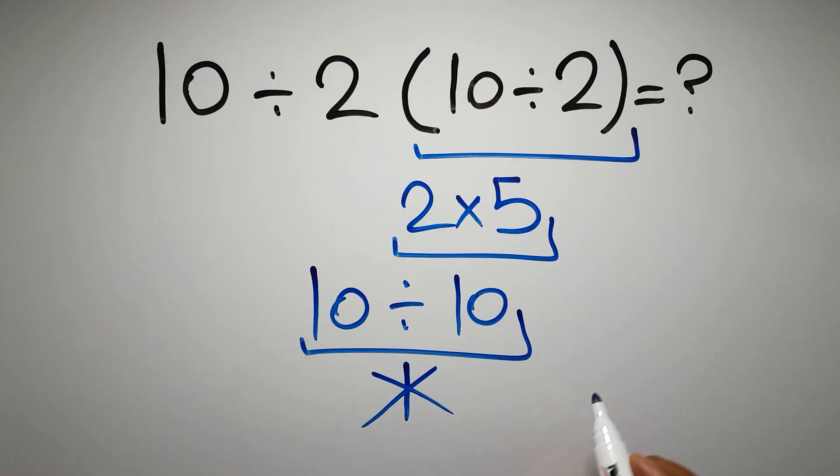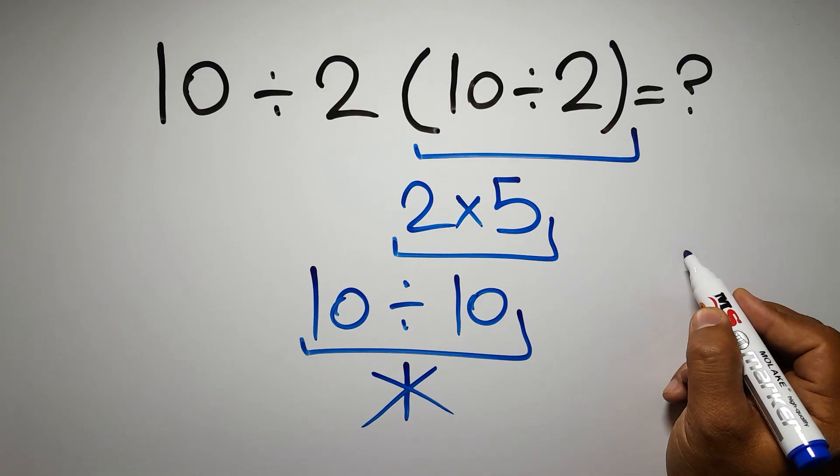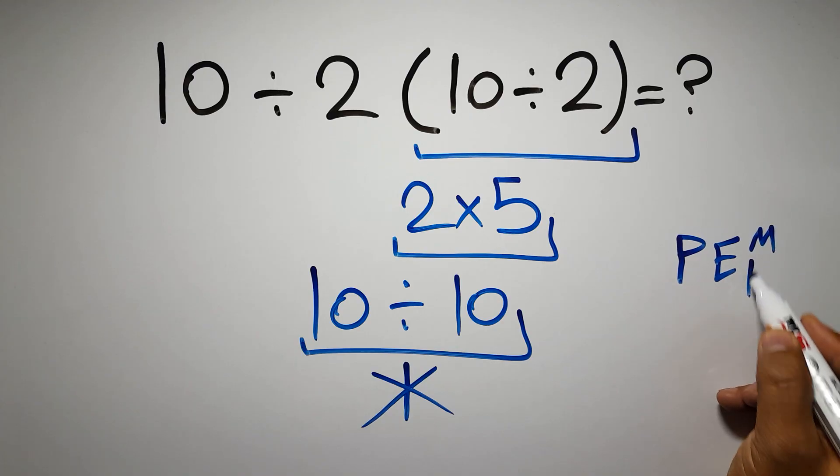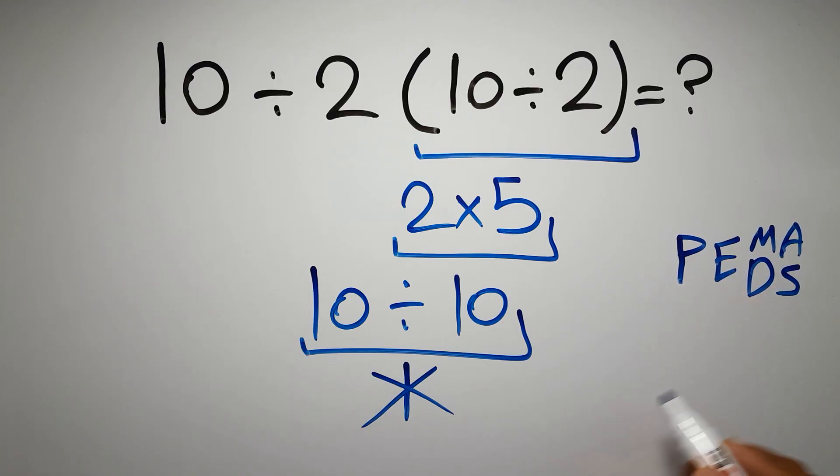According to the order of operations, first we have to do parentheses, then exponents, then multiplication or division, and finally addition or subtraction. Remember that multiplication and division have equal priority, and we have to work from left to right. The same applies to addition and subtraction.